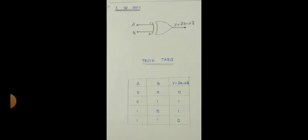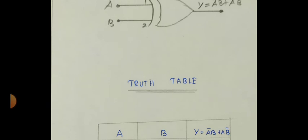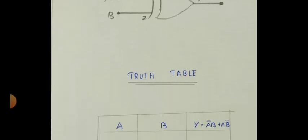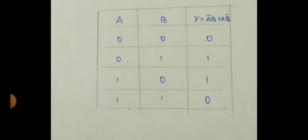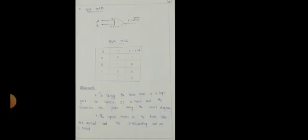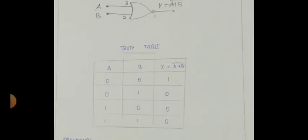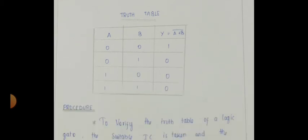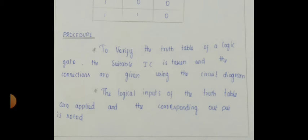Now we are going to see the exclusive OR gate and its truth table. Next, the NOR gate — it is the OR gate plus NOT gate — and its truth table. The procedure given here is what's given in your book.